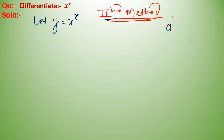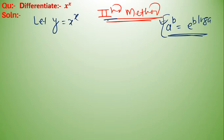Now the second method. Let y equal to x to the power x, and we use the formula a to the power b equals e to the power b log a. Applying this formula, y equals e to the power x log x.